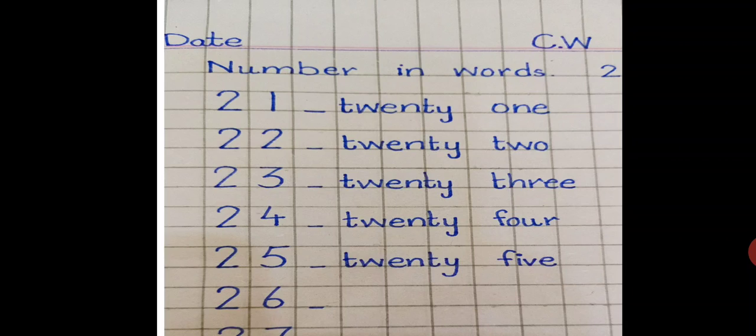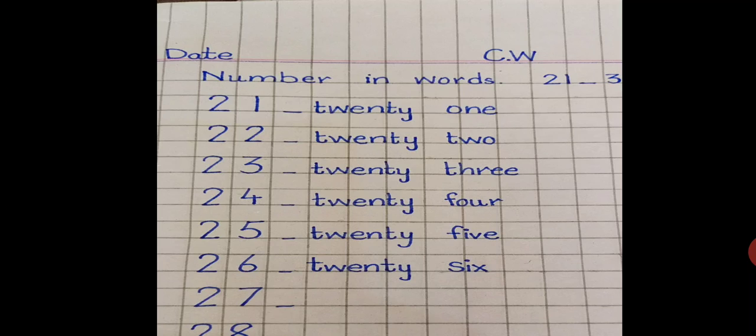F-o-u-r, 4. Twenty-four. What comes after 24? 25. Again, t-w-e-n-t-y, 20. Take one finger gap and write f-i-v-e, 5. Twenty-five. What comes after 25? 26. Write t-w-e-n-t-y. Take one finger gap. S-i-x, 6. Twenty-six.